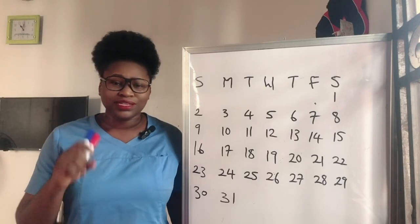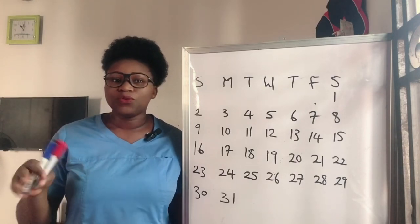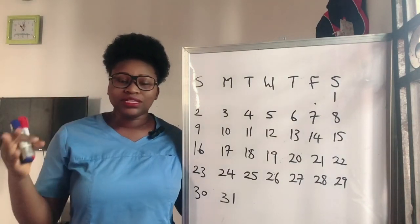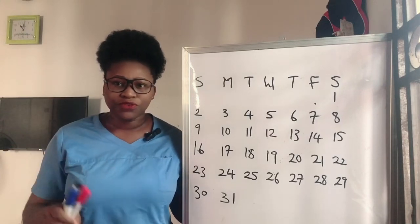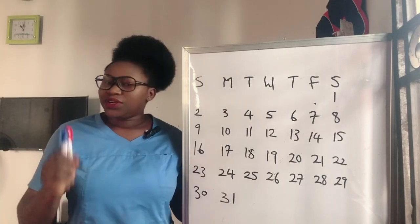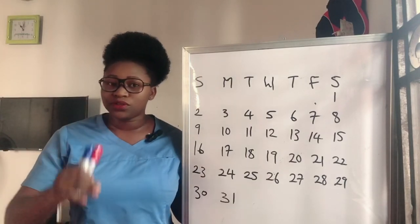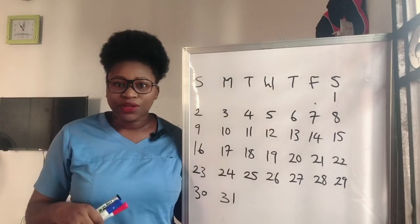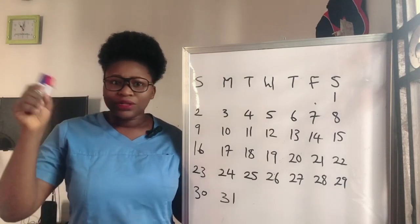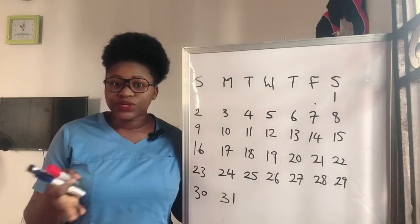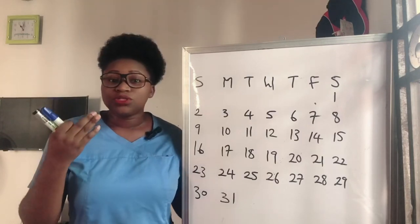What do I mean by irregular cycles? Irregular cycles and irregular periods are two different things. Irregular periods means you're getting your period irregularly — maybe this month you get your period and the next time won't be for three or six months. When I say irregular cycles, I mean you're getting your period every month but the cycle length varies — 23 days one month, 28 the next, then 24, then 25. That is irregular cycles.